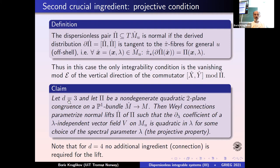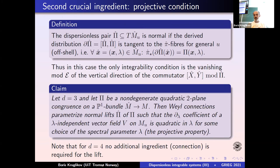Here's the second crucial claim. When d=3 and π is a non-degenerate quadratic two-plane congruence corresponding to a correspondence space bundle, Weyl connections parameterize the normal lift π to π̂ such that the del_λ coefficient of λ-independent vector fields in the lift is quadratic in λ — that's what we call the projective property. That's a very restrictive property. Ideologically, it tells us that there is essentially only one Lax pair: you have a lot of freedom before, but imposing normality and projective property together, the Lax pair is unique modulo equivalence. That's for d=3. For d=4, as I explained, we don't need any additional ingredients.